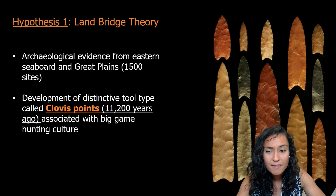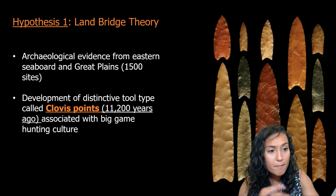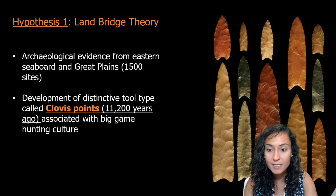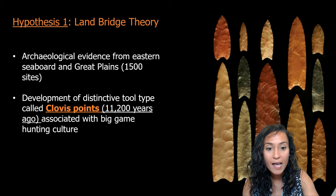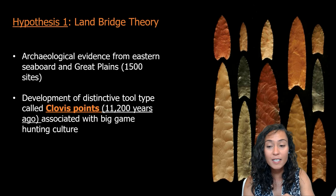Clovis points are very distinctive. They have a lance-shaped tip and are typically about four inches long. They're made from a wide variety of materials, including jasper, chert, and obsidian. Extending from the base of the point towards the tip are shallow, concave grooves — called flutes — that would have helped the points be inserted into a wooden shaft for spears.